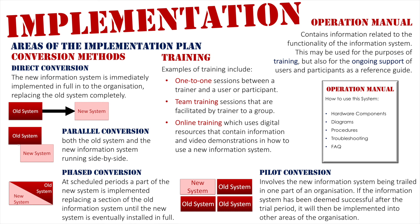I hope this video has given you a good understanding of the implementation stage of system development, covering these three main areas: the conversion method for transitioning the old system into the new system within an organization; methods for training the participants and users on how to use the new system; and the importance of developing an operations manual — not just for training, but also for providing ongoing support after the project team has left.